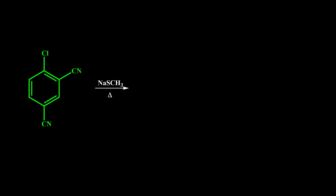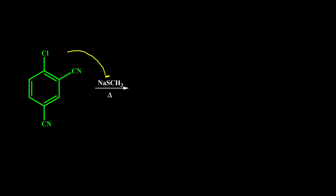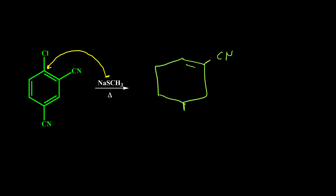In this example, we again have chlorine as the leaving group, and on the ortho and para positions we have strong electron-withdrawing groups (CN). Our nucleophile is SCH3, so we can easily carry out the NAS reaction. The product has CN and CN groups, and instead of chlorine we have SCH3.